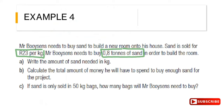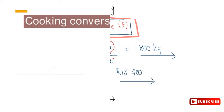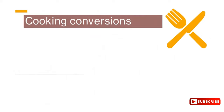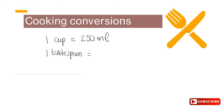Now let's look at cooking conversions. This table must be memorized: 1 cup equals 250 milliliters; 1 tablespoon equals 15 milliliters; and 1 teaspoon equals 5 milliliters.